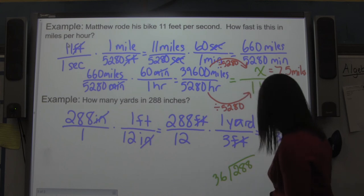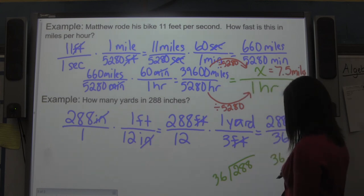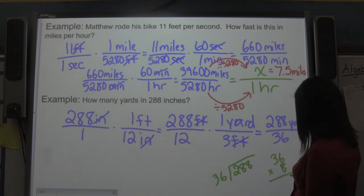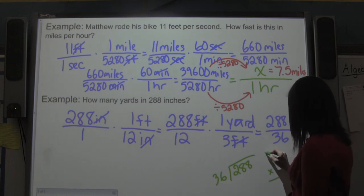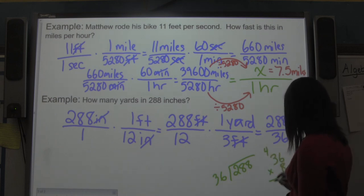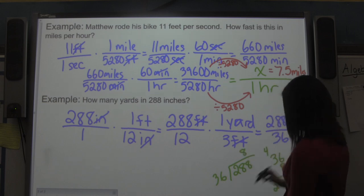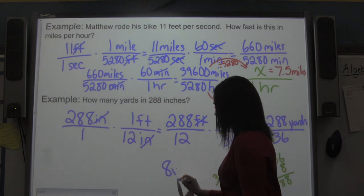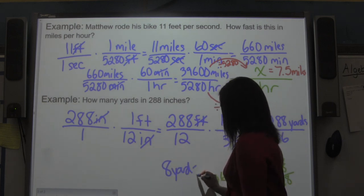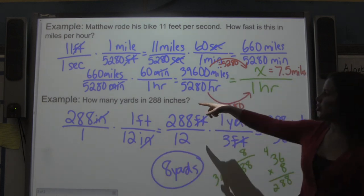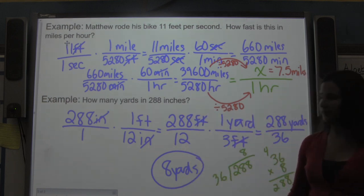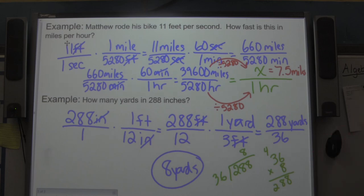I divide 288 by 36: 36 times 8 is 288, so the answer is 8. That means 288 inches is the same as 8 yards.